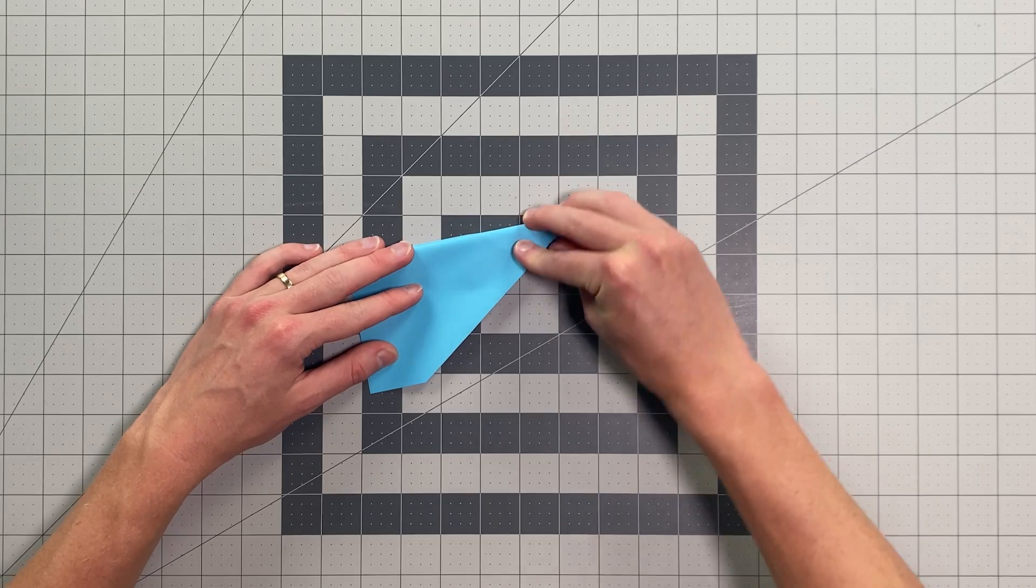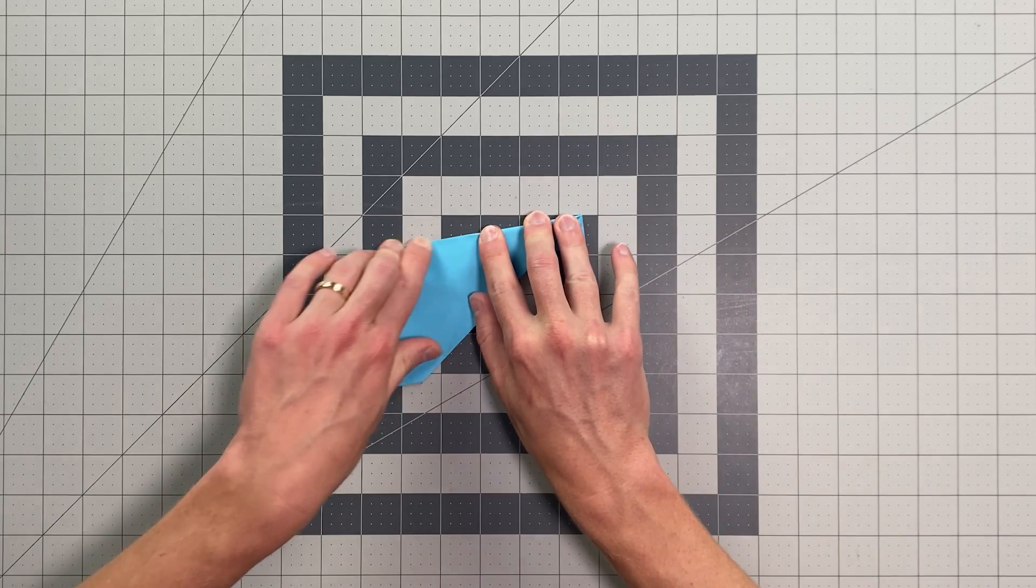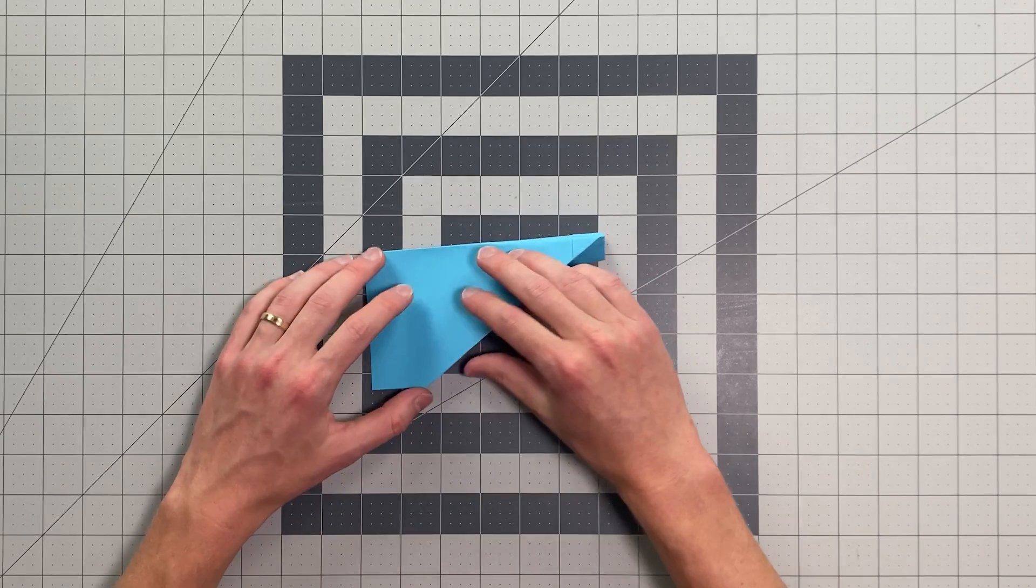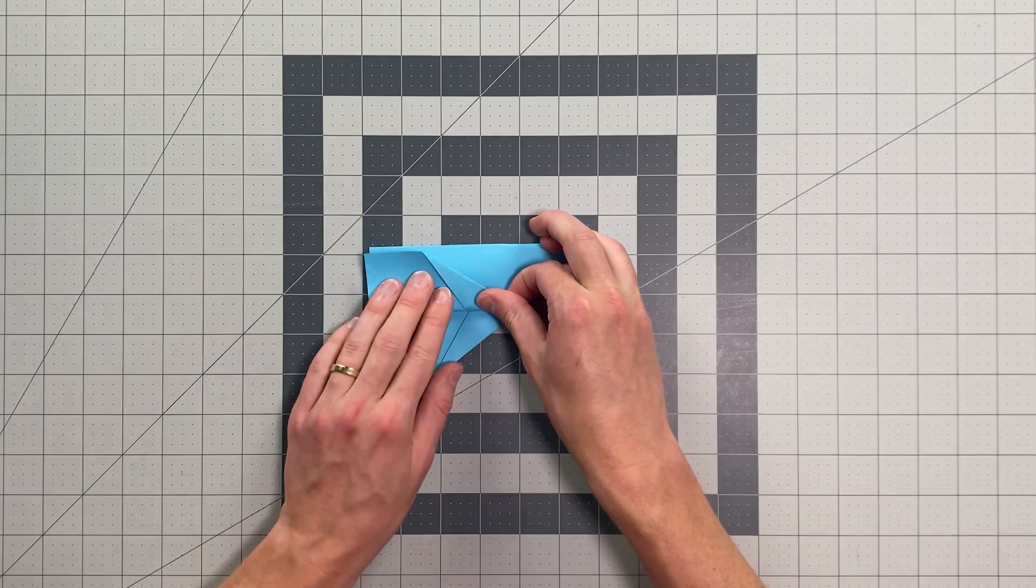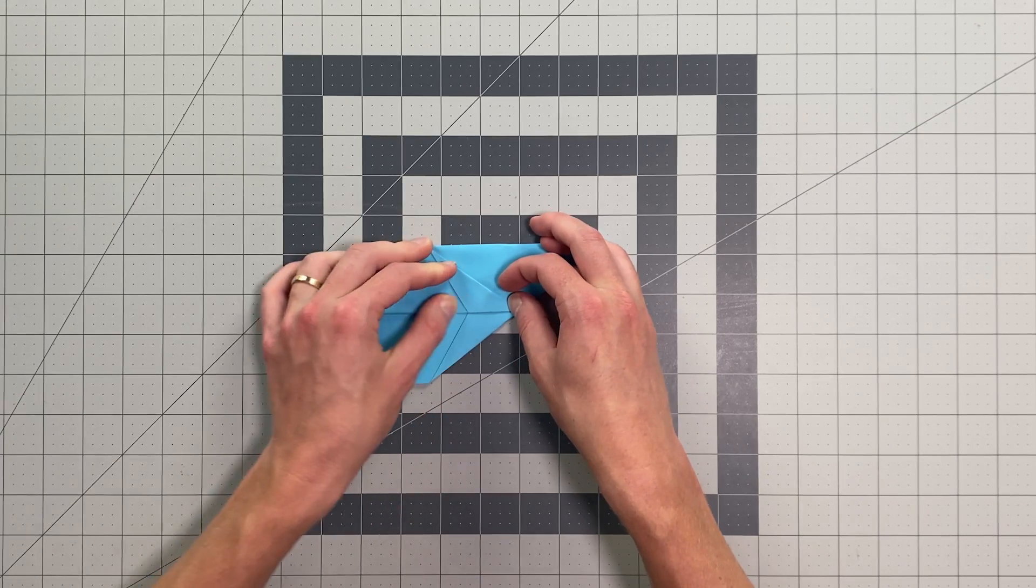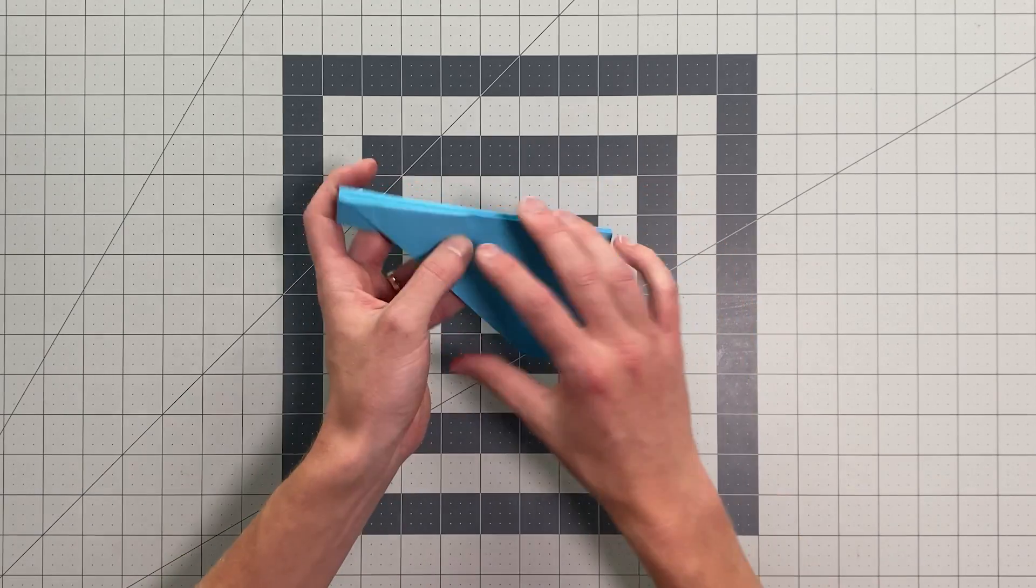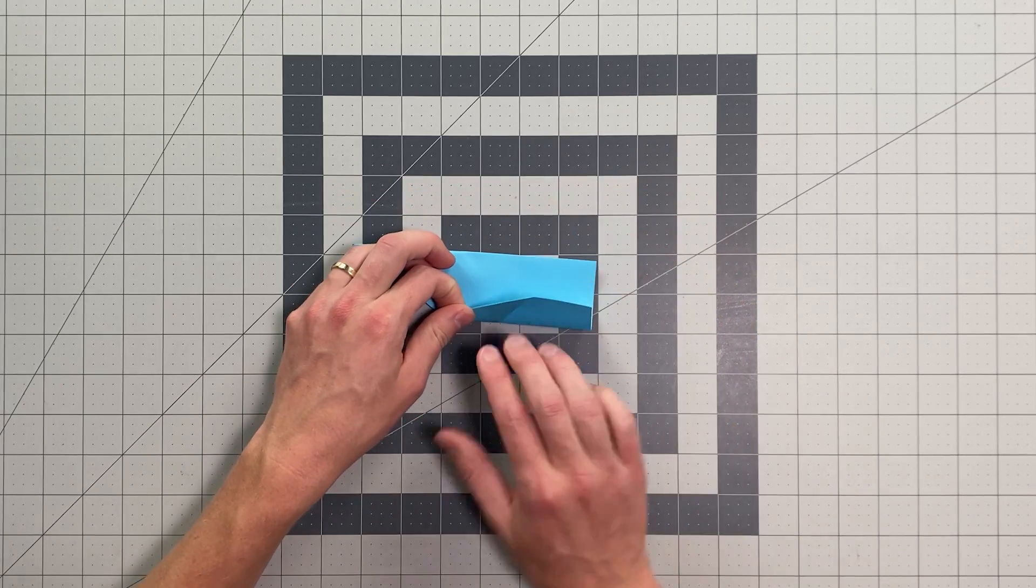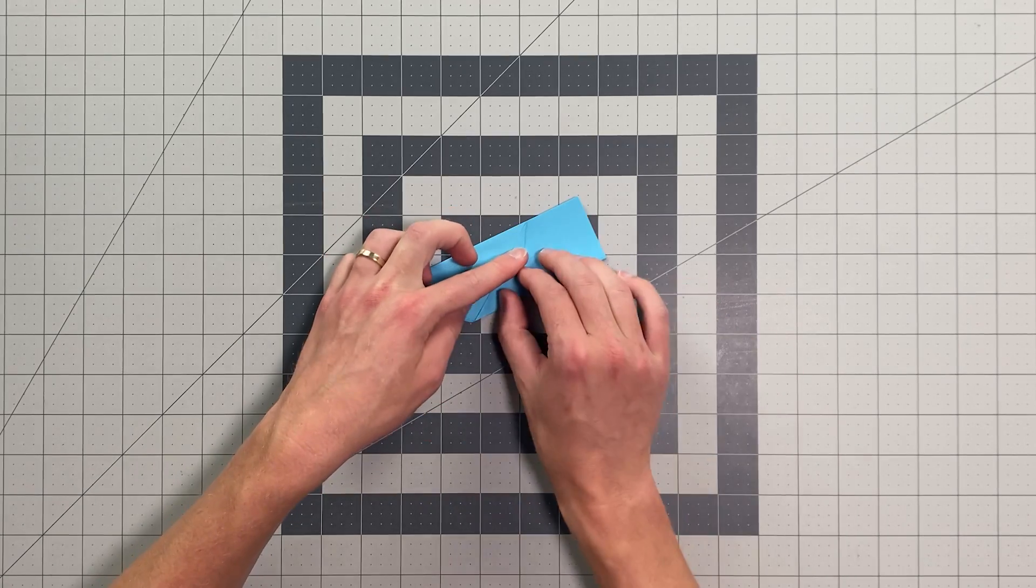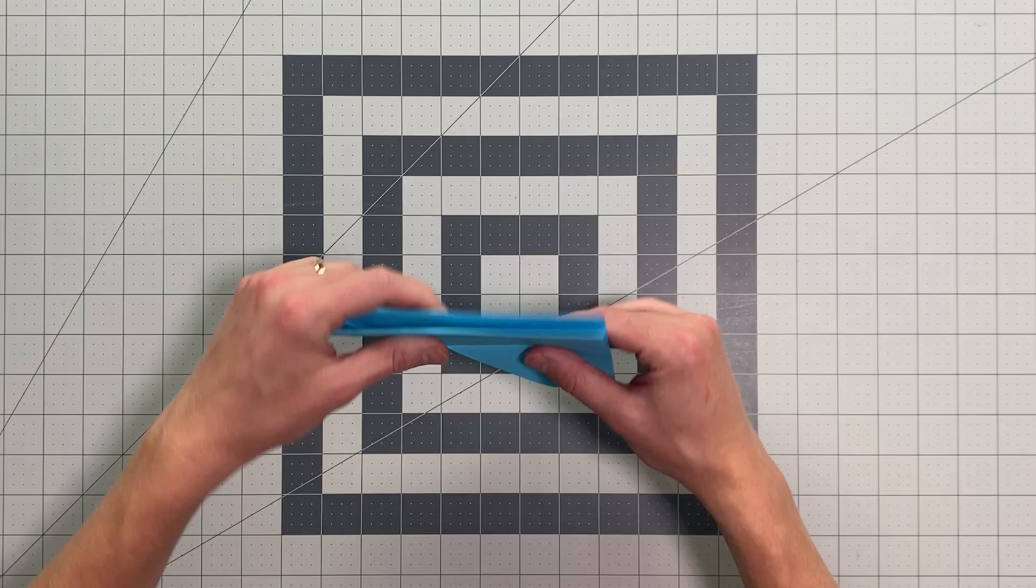Lining up my wings as I do this. And now I'll go ahead and fold this edge here back up to that edge. And then flip the paper over, do the same thing on this side.